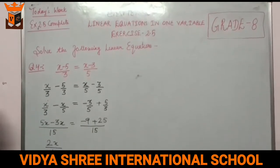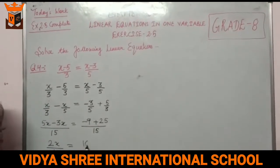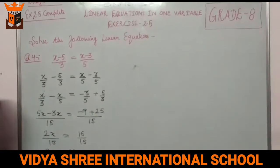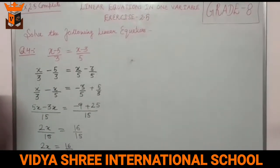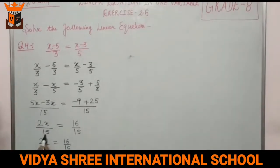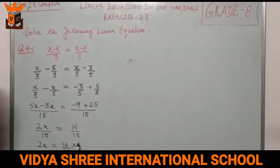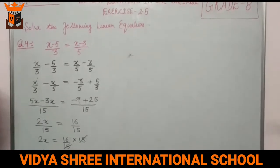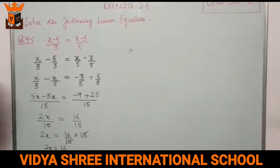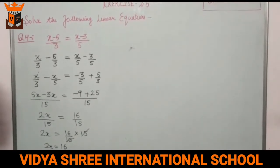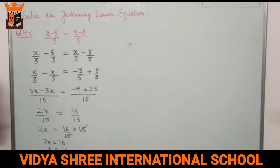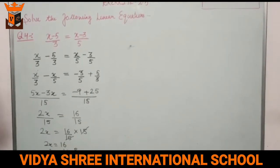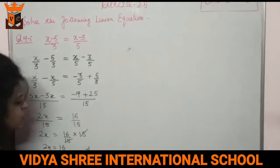This gives 2x/15 equals 16/15. The 15 in the denominator goes to the other side and multiplies, so 15 and 15 cancel. Then 2x equals 16, and dividing by 2 gives x equals 8. That is the answer.